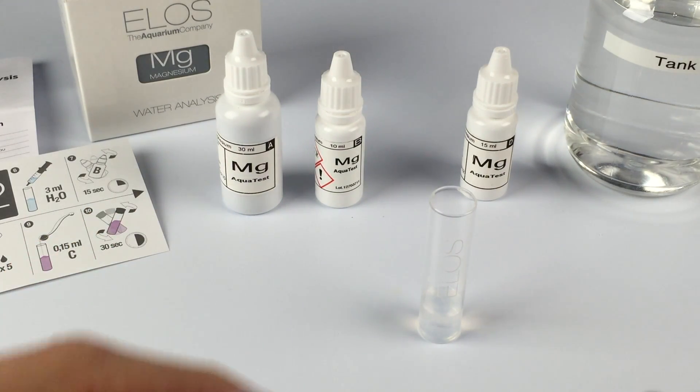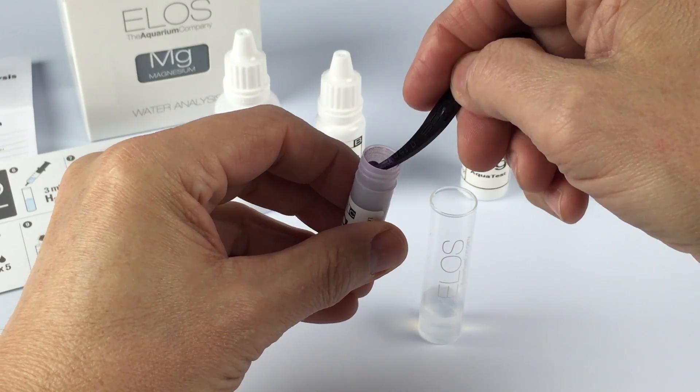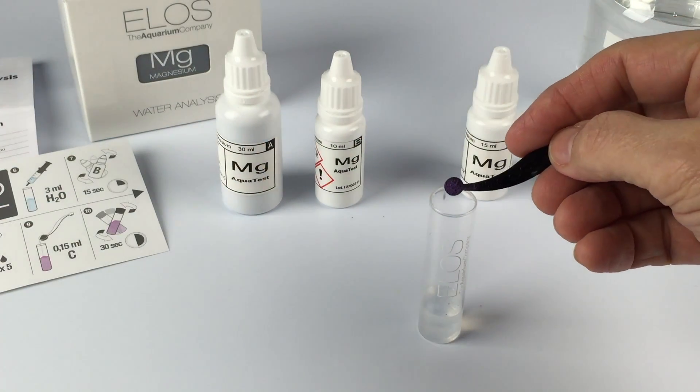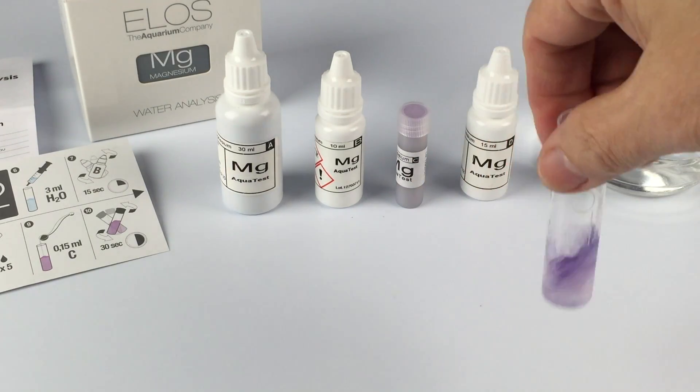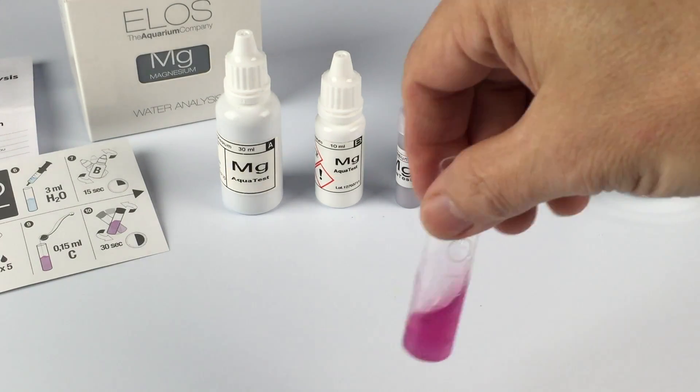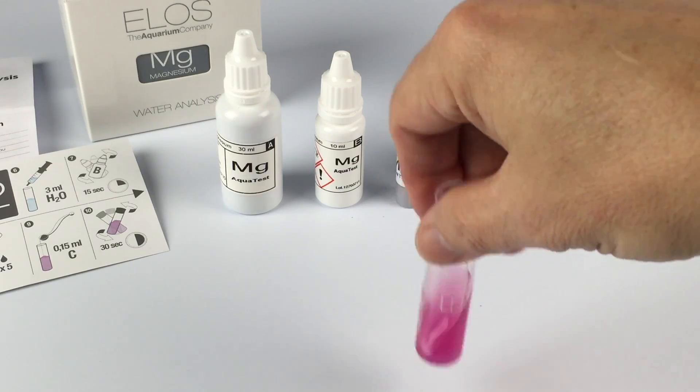Use the smaller end of the scoop, the 0.15 milliliter powder. It doesn't have to be an exact amount; this is merely a color indicator. Shake the vial for 30 seconds to mix the solution. Not all the powder has to dissolve.